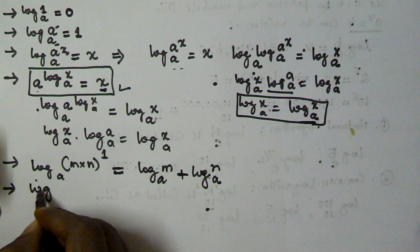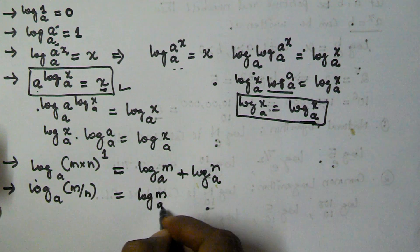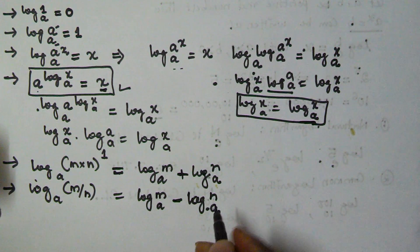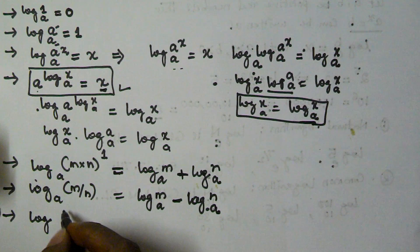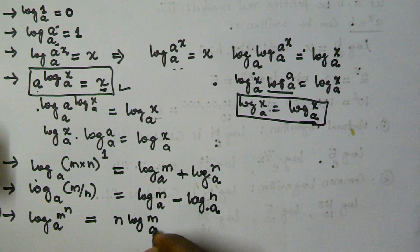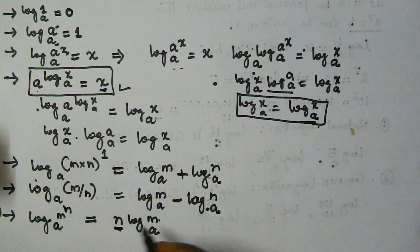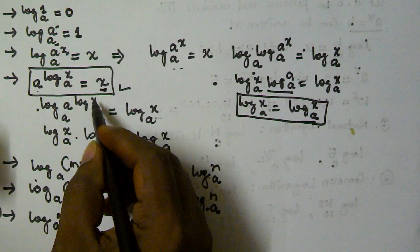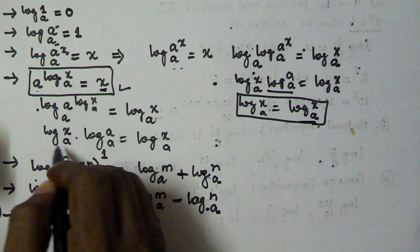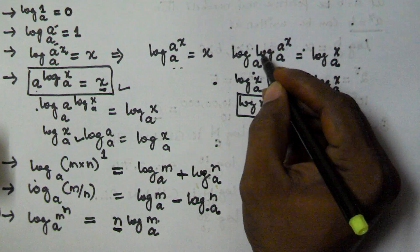The next property is log base a of (m/n), which is equal to log m base a minus log n base a. In the same manner, when we have log base a of m^n, it is going to be equal to n times log m base a. Whenever we have a power on the value, that can be shifted to the front — the same thing we have done in the earlier derivations using this power rule formula.